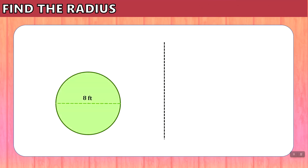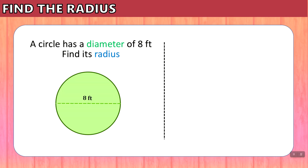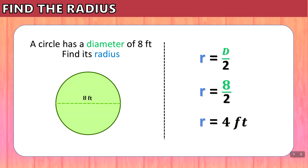Let's take a look at how to find the radius. In this circle, the diameter is 8 feet, and we're asked to find the radius. If we are asked to find the radius, we need to use the formula R equals D over 2. We substitute D for the length of the diameter — in this case, it is 8 feet — so R equals 8 divided by 2, which gives us 4 feet.